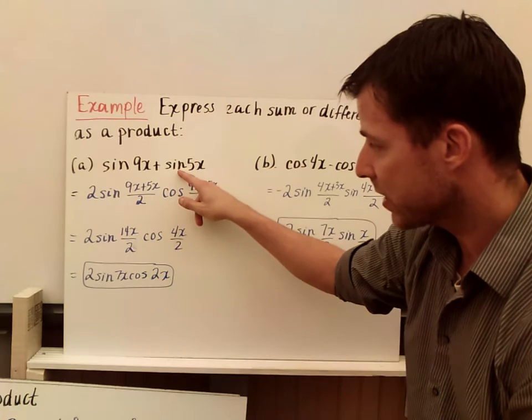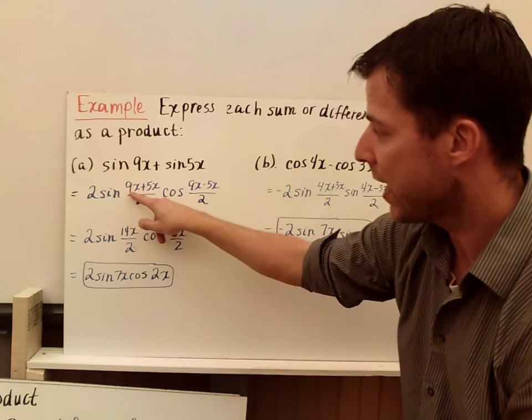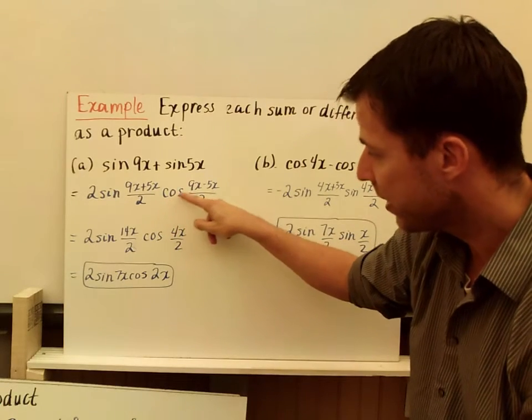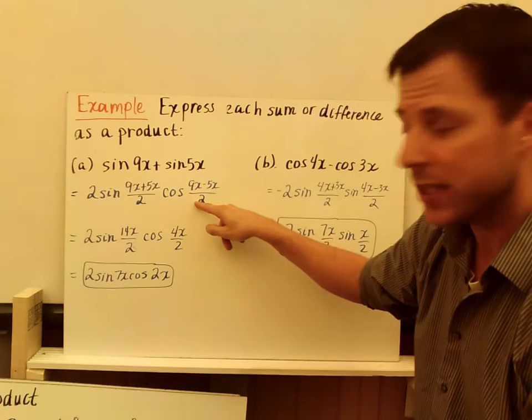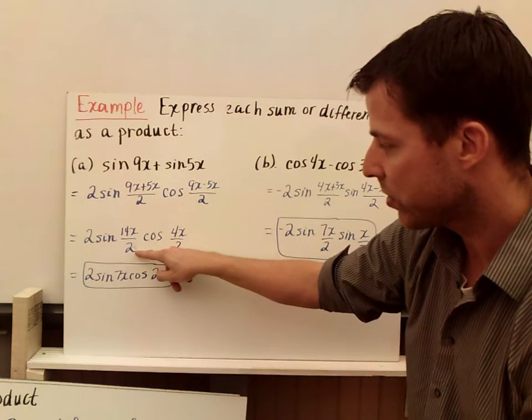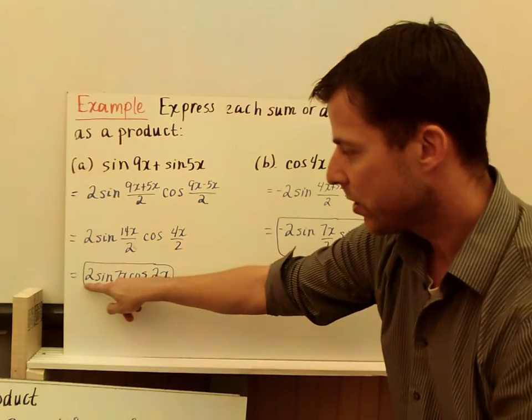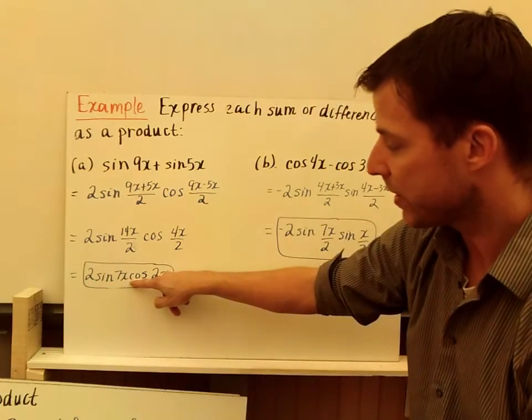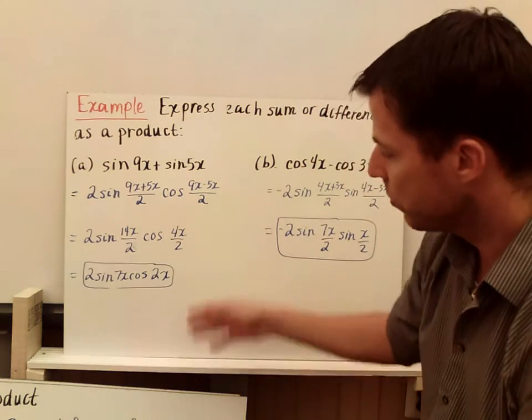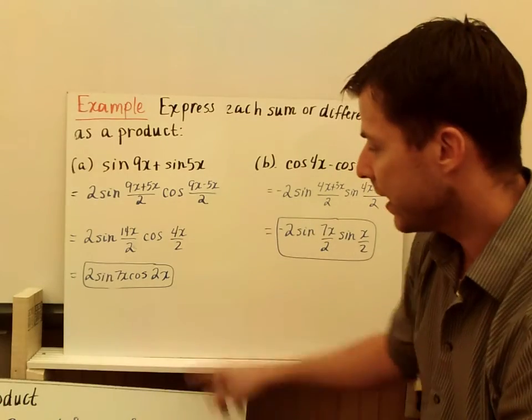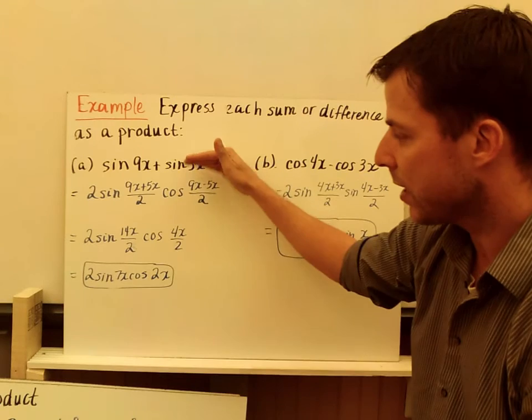So I'm going to have sine of 9x, sine of 5x into this. It becomes 2 sine of 9x plus 5x over 2 times cosine 9x minus 5x over 2. Again, I'm going to simplify these fractions. So I get 2 sine of 14x over 2 times cosine of 4x over 2 becomes this: 2 sine of 7x times cosine of 2x. So I just divided 14x by 2 is 7x, 4x divided by 2 is 2x. And again, we can't do anything here. So that's a sum to a product.